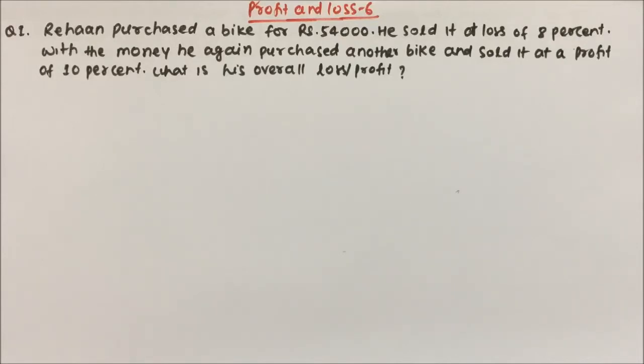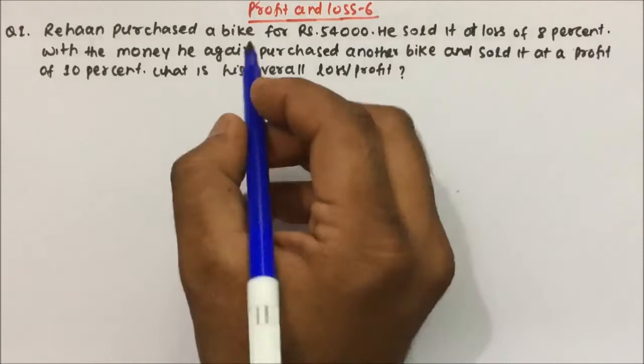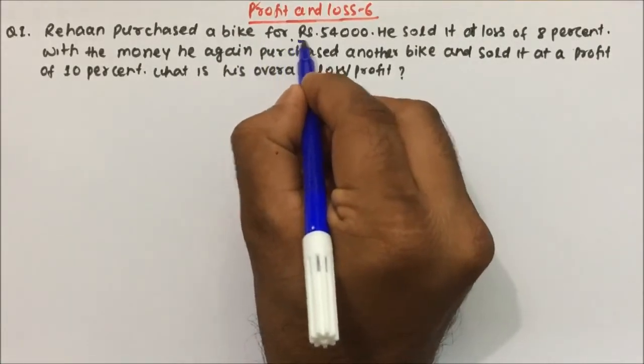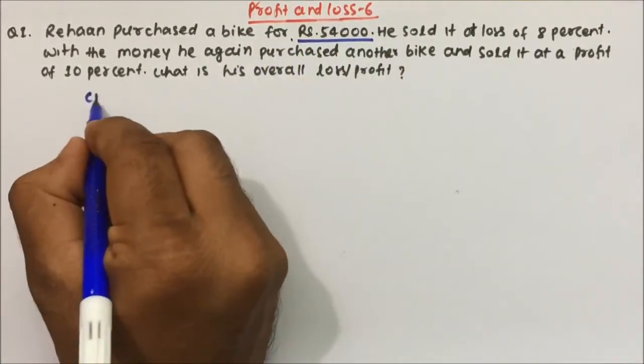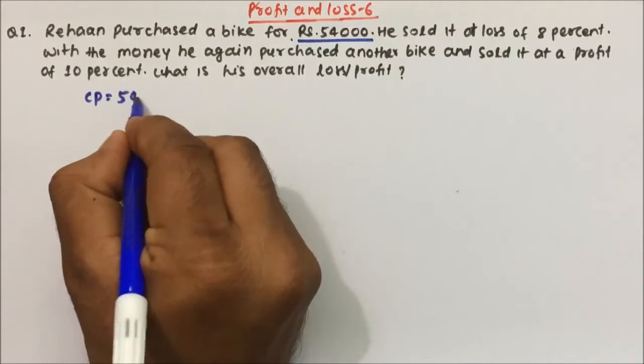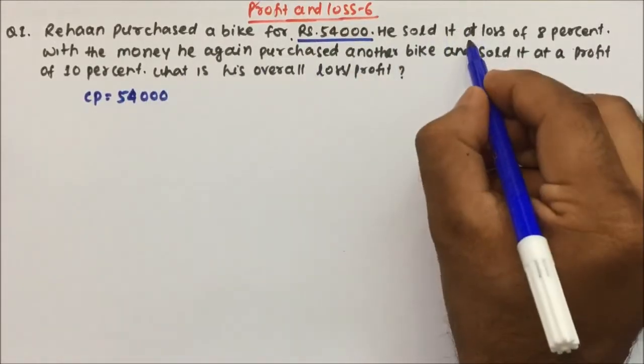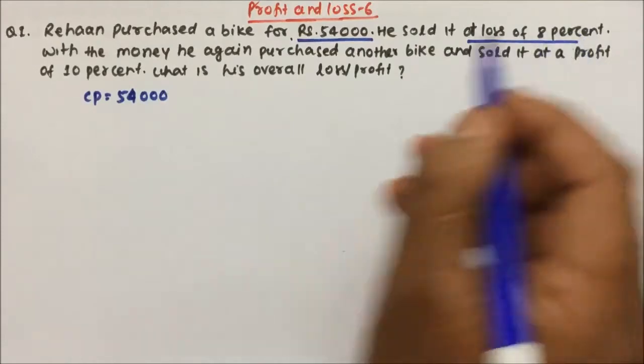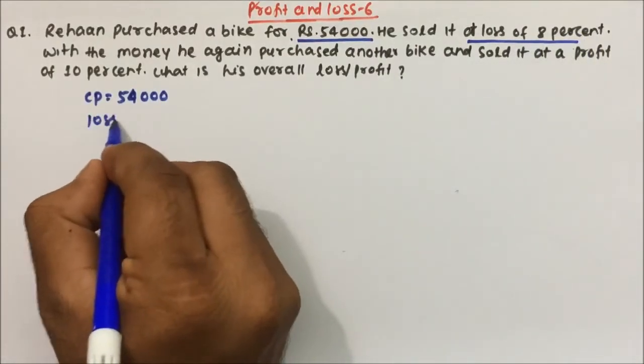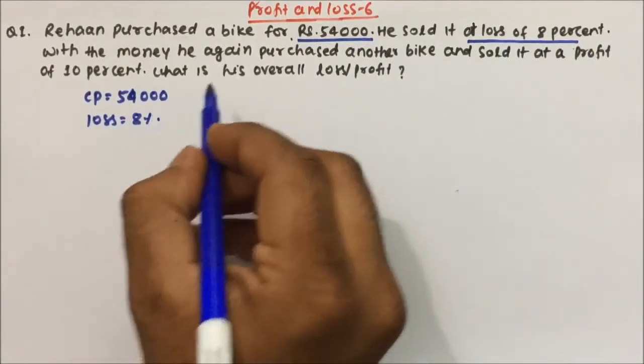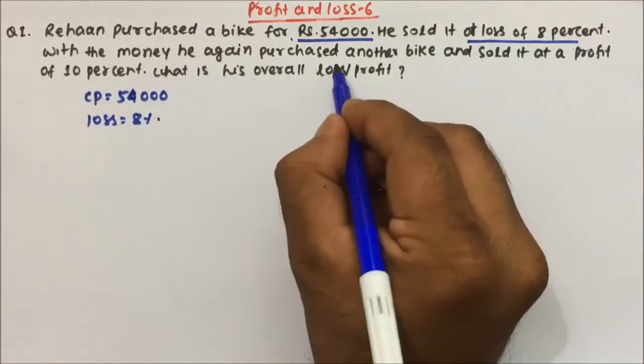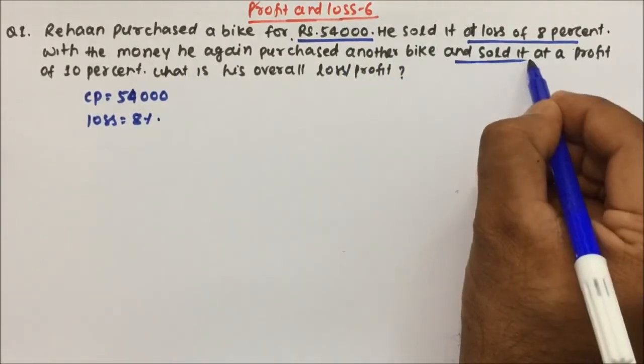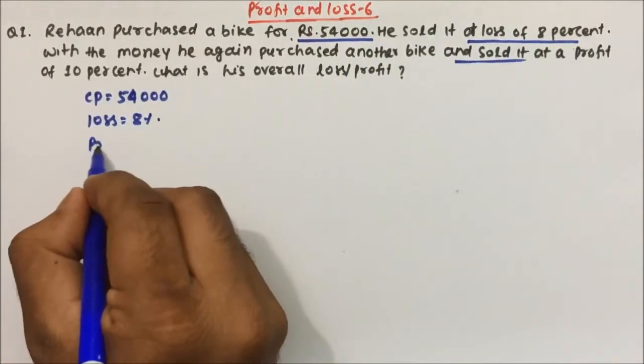So let's understand the question and try to solve it here. Rehan purchased a bike for Rs. 54,000. So what is the cost price of the bike? 54,000 rupees. And then he sold it at a loss of 8%. With the same money, he again purchased another bike and sold it at a profit of 10%.